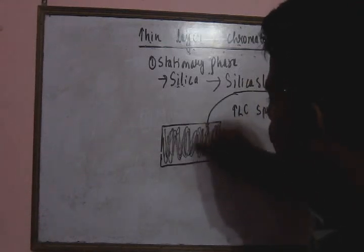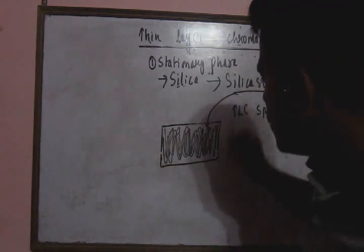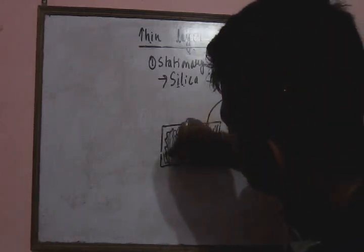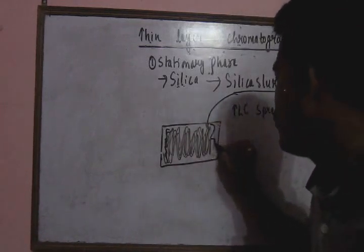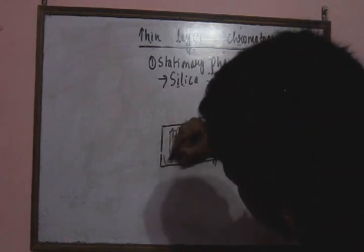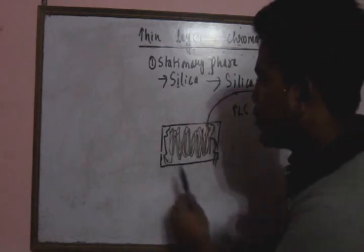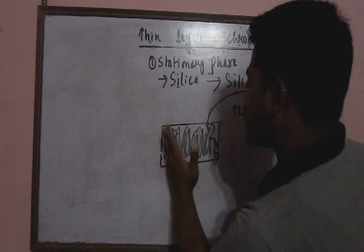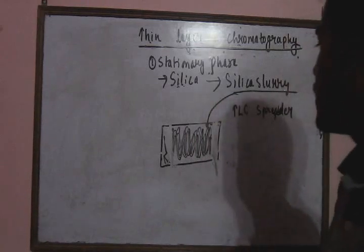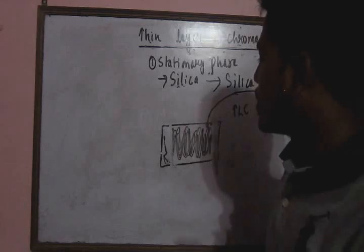After you put the slurry, you have to dry it and activate it. There may be some non-uniform distribution in the slurry, so the TLC plate may not have a straight edge. To fix this, you can cut it with a ruler or similar tool to make it straight, and in this way you can prepare the stationary phase.